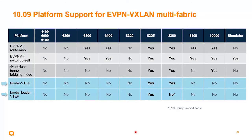Now for supported CX switch platforms: the eBGP EVPN route map inside the eBGP address family is available on the 6300, 6400, 8325, 8360, 8400, and 10000. The next-hop-self command in the eBGP address family is available on those same platforms plus the simulator. For the data plane — specifically the capability to bridge VXLAN tunnels dynamically between the internal BGP and external BGP broadcast domains — this is available on the 8325, 8360, and 10000.